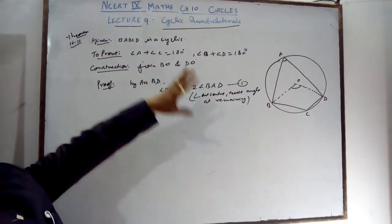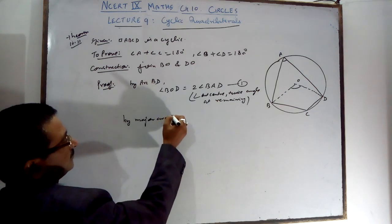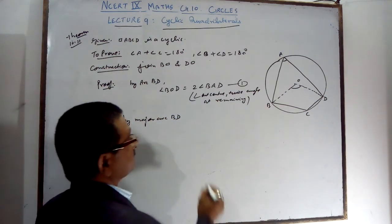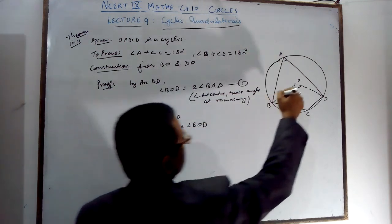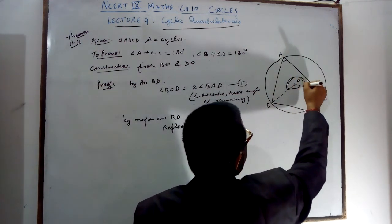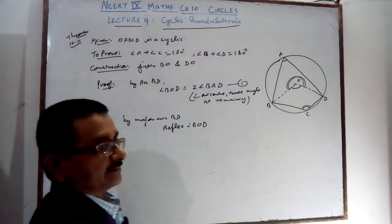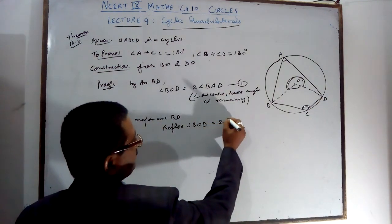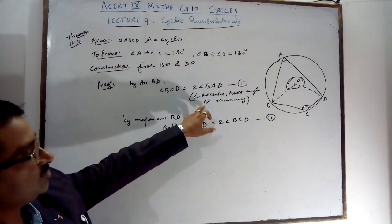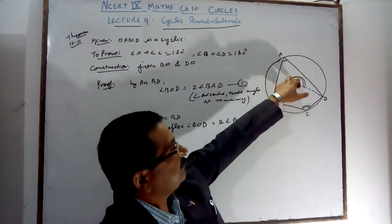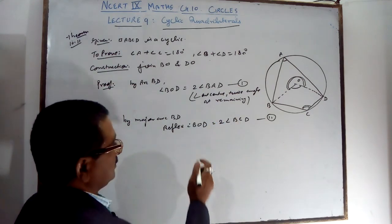The angle subtended by the arc at the center is twice the angle in the remaining part. By major arc BD, you get a reflex angle. Reflex angle BOD is related to angle BCD at the remaining part. So reflex angle BOD equals twice of angle BCD — this is equation 2. Same theorem: if the angle at center is 100 then the arc angle is 200, and so on.